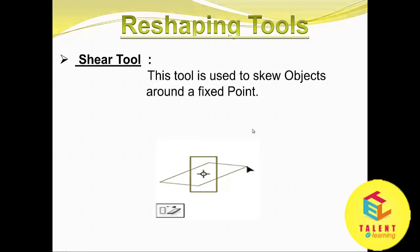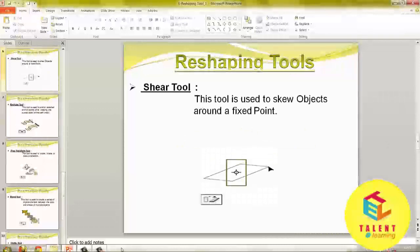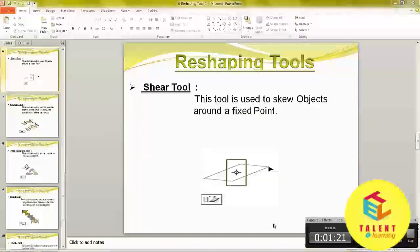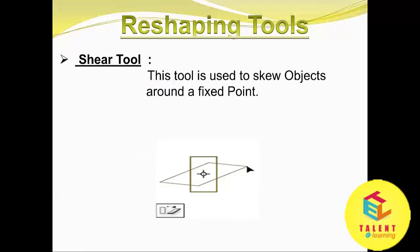Shear tool: this tool is used to skew an object around a fixed point. This is a symbol of the Shear tool.